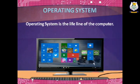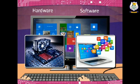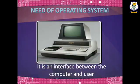What is an operating system? The operating system is the lifeline of the computer because the computer cannot function without it. The operating system is an essential component of a computer system. It is a system software that manages computer hardware and software resources and provides common services for computer programs.